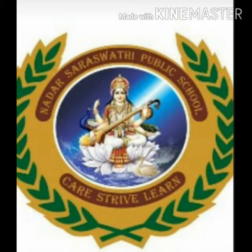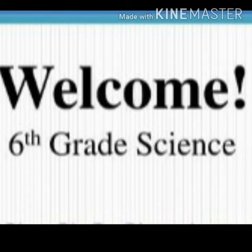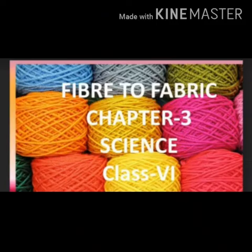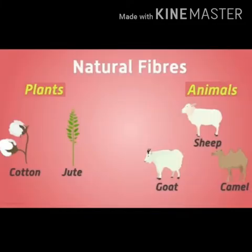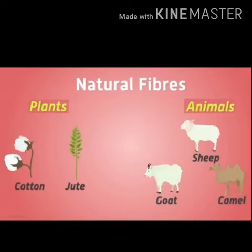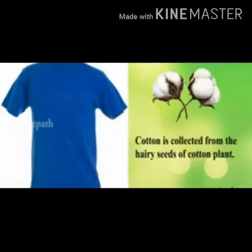Hello students, welcome to our class. We are studying Chapter 3: Fiber to Fabric in science. We have studied types of fibers — natural fibers and synthetic fibers. Natural fibers include cotton and jute, which are plant fibers, and animal fibers obtained from sheep, goat, and camel. Cotton is collected from the hairy seeds of the cotton plant, from which we get cotton fabric.